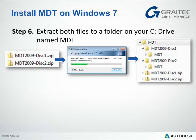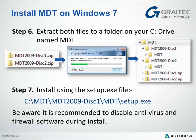Step 6: extract both the files that get downloaded to a folder on your C drive called MDT, as shown. Step 7: install the setup.exe file from the path indicated. Be aware it's recommended to disable your antivirus and firewall during the install to prevent it locking out any registries, etc.